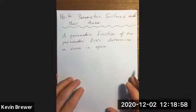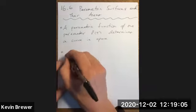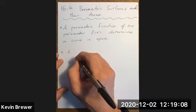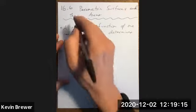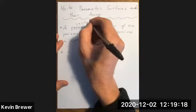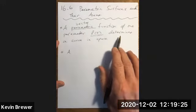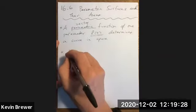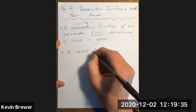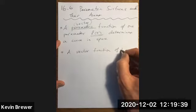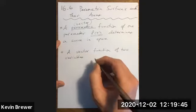Or in the plane, and this we've already studied. I've stated these as vector functions. A parametric function would just be to list out x of t, y of t, z of t separately. A vector function of two variables determines the surface.